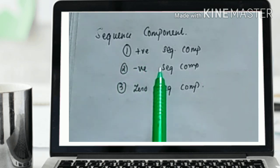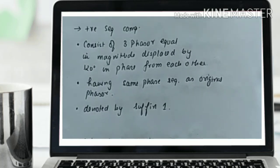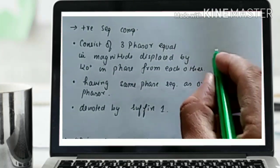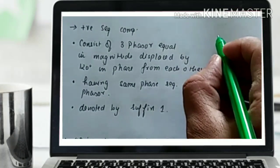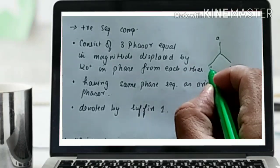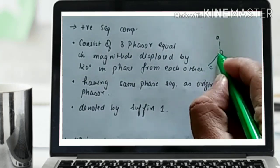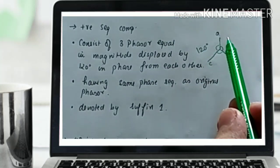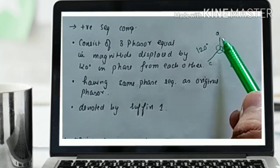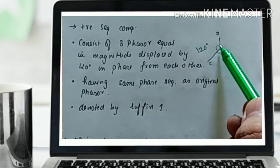Starting with the positive sequence component: it consists of three phasors equal in magnitude. Suppose this is a three-phase diagram with A, B, C — all magnitudes of A, B, C will be the same, and the angle between them is 120 degrees. So in the positive sequence component, the magnitude of A, B, and C will be equal and displaced by 120 degrees.